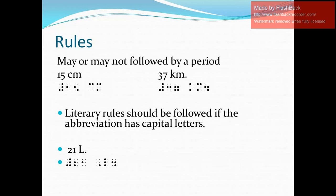For our next rule, it says that we need to follow the literary rules if there is a capital letter or capital letters in the abbreviation. So here as an example, I have 21 liters. Now the abbreviation for liter is capital L. So the Braille equivalent should also have a capital sign indicator. So again, we have numeric indicator, digits two and one, space, the capital sign indicator which is dot six, letter L, and followed by a period since in print there is a period.